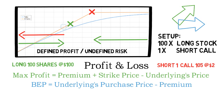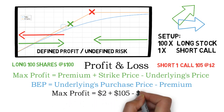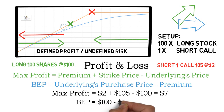This means the max profit of this covered call is $2, which is the premium received, plus the strike price of $105, minus $100, which is the price you paid for each share of the underlying stock. This means the max profit is $7 per share. As this example was with 100 shares, this would be $700. Now let me show you how to calculate the break-even point of this position. You simply subtract $2, which is the premium received, from $100, which gives $98. So this position breaks even if the stock price drops down to $98.